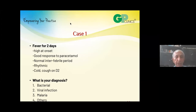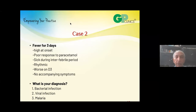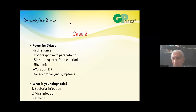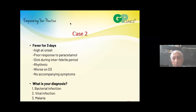Let's look at my second case. This child has fever for three days. High fever at onset, did not respond well to paracetamol. He remained sick during the interfebrile period. The fever came down by a degree or two and went up again every four to six hours — it was rhythmic. By day three, he was looking even worse than before. There were no accompanying symptoms — no cold, no cough, nothing. Friends, what is the diagnosis? Is it bacterial, viral, malaria, or anything else? Your time starts now.